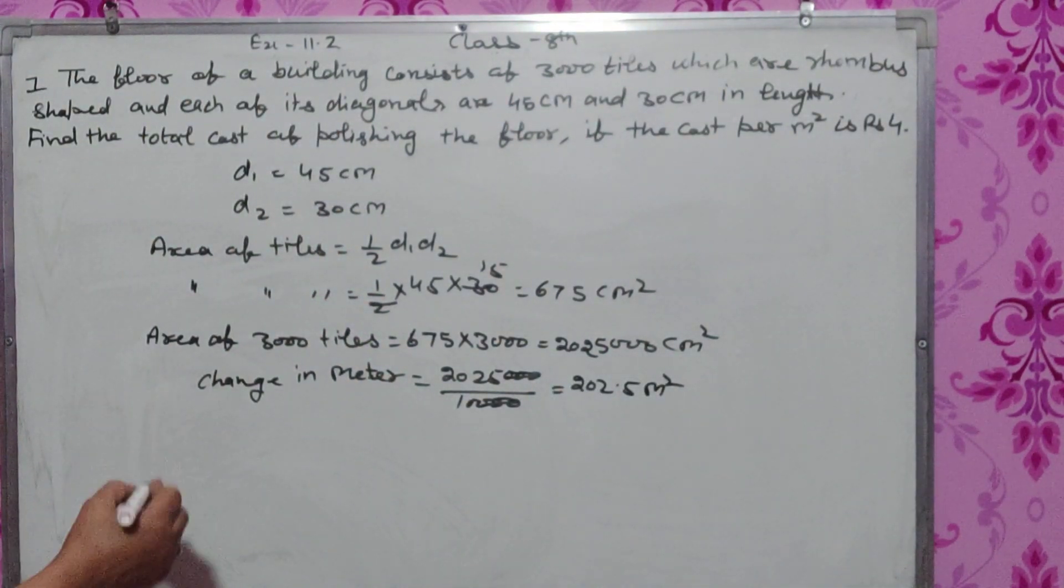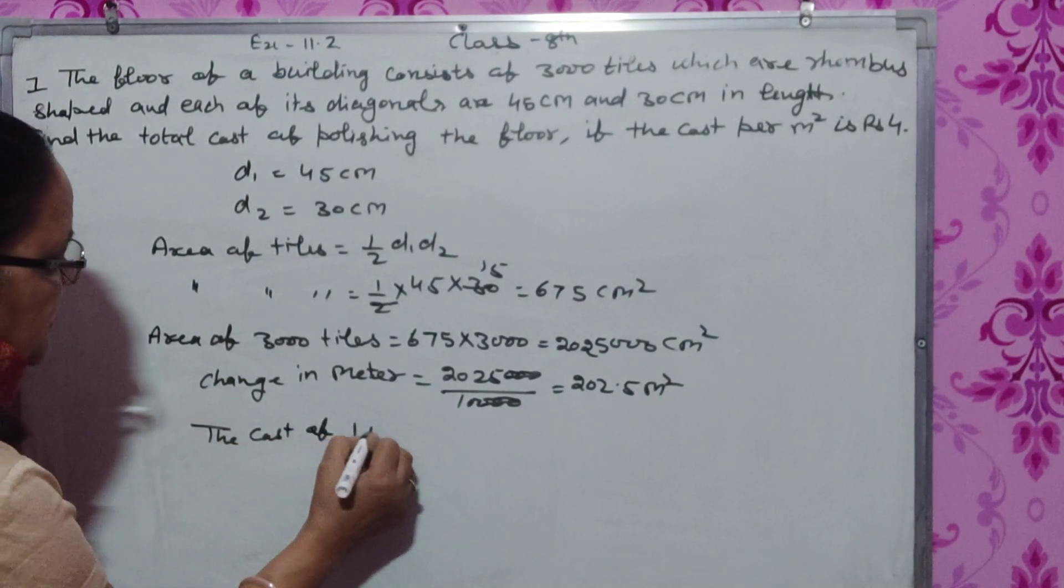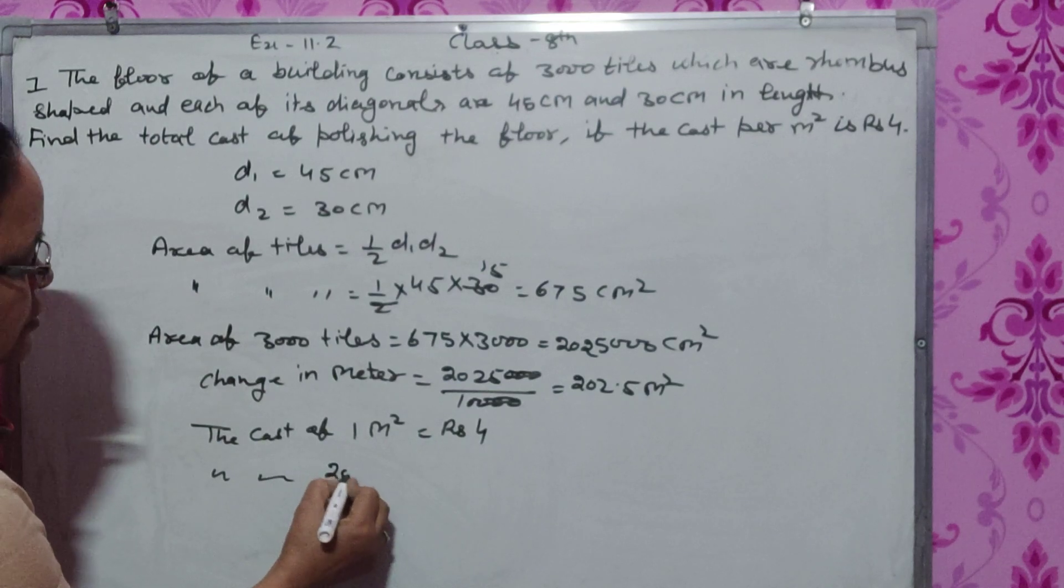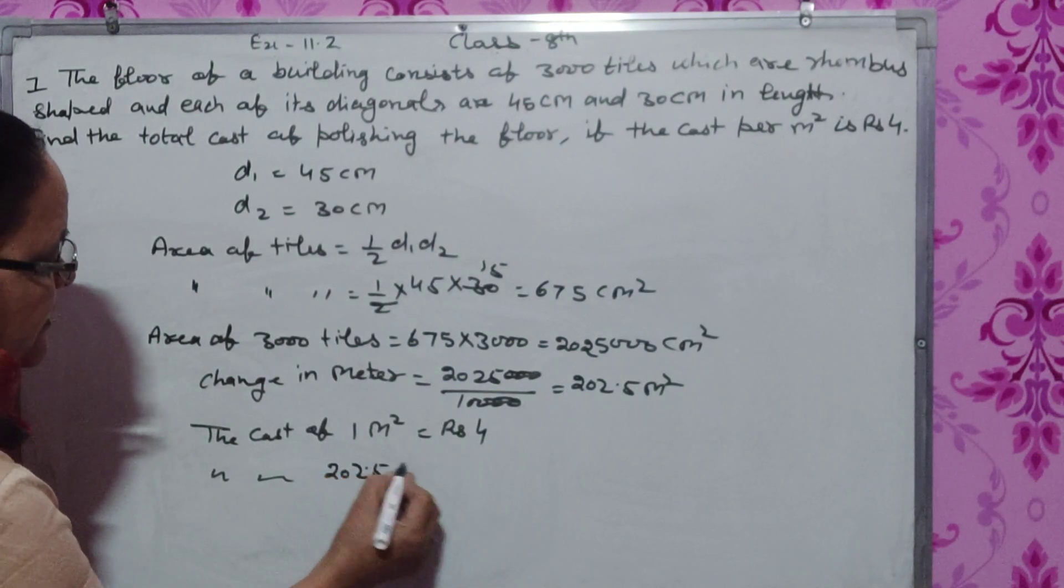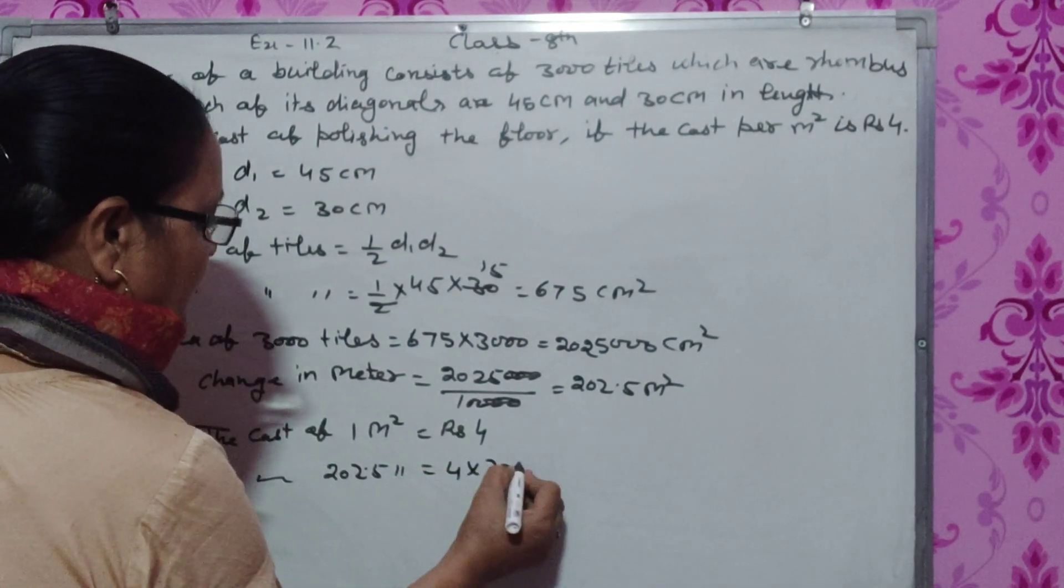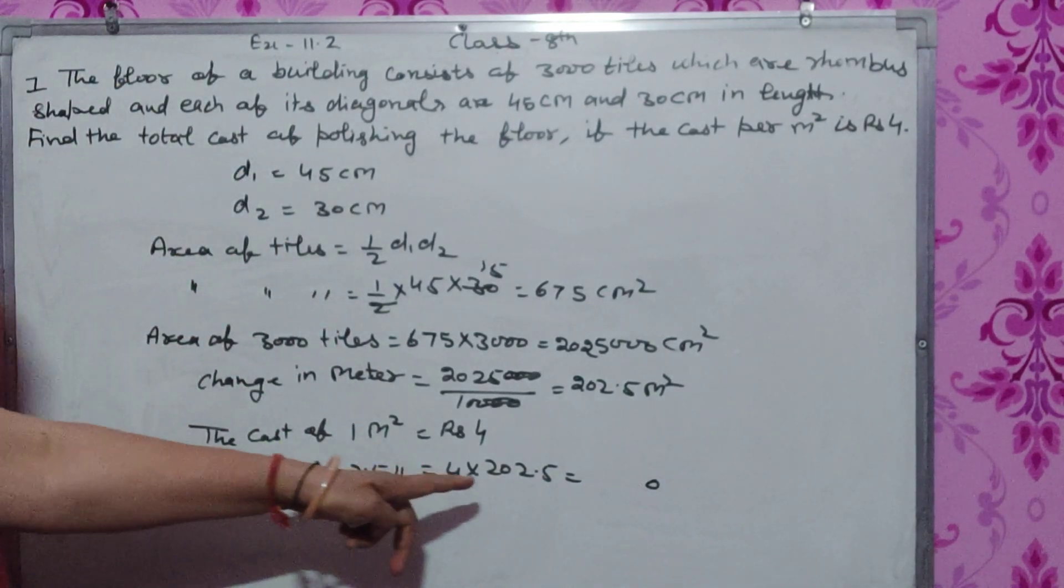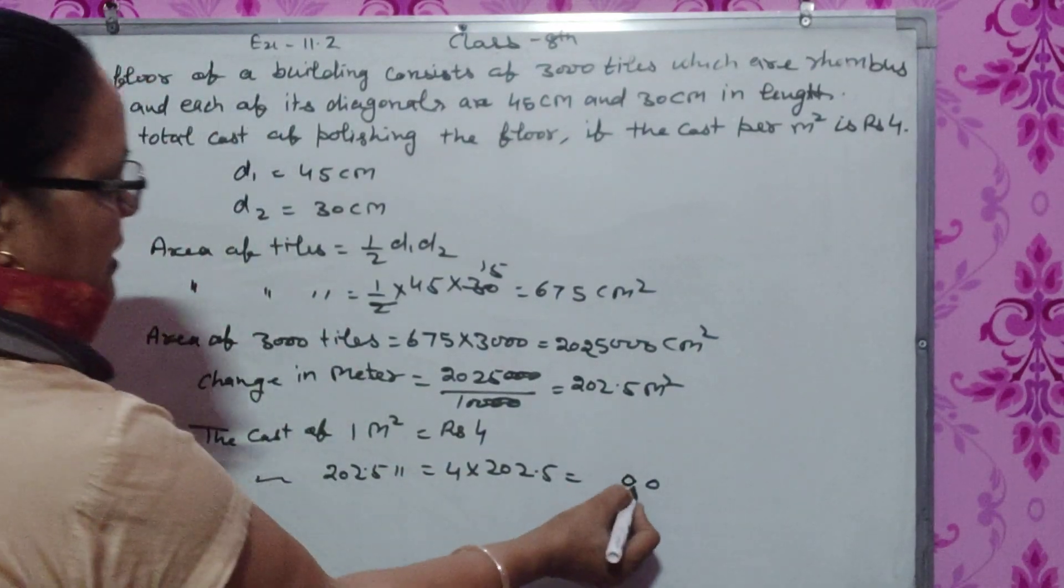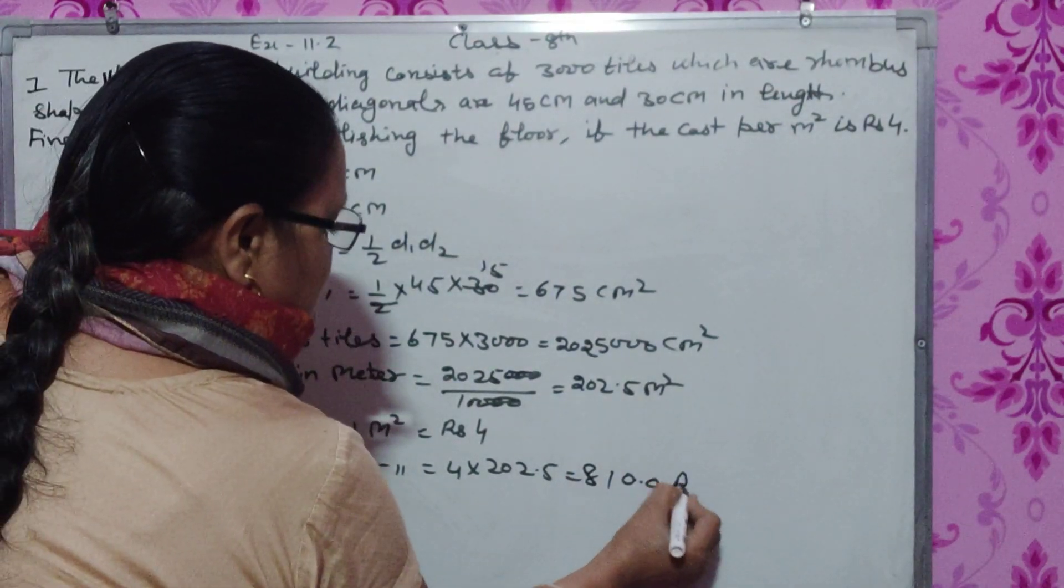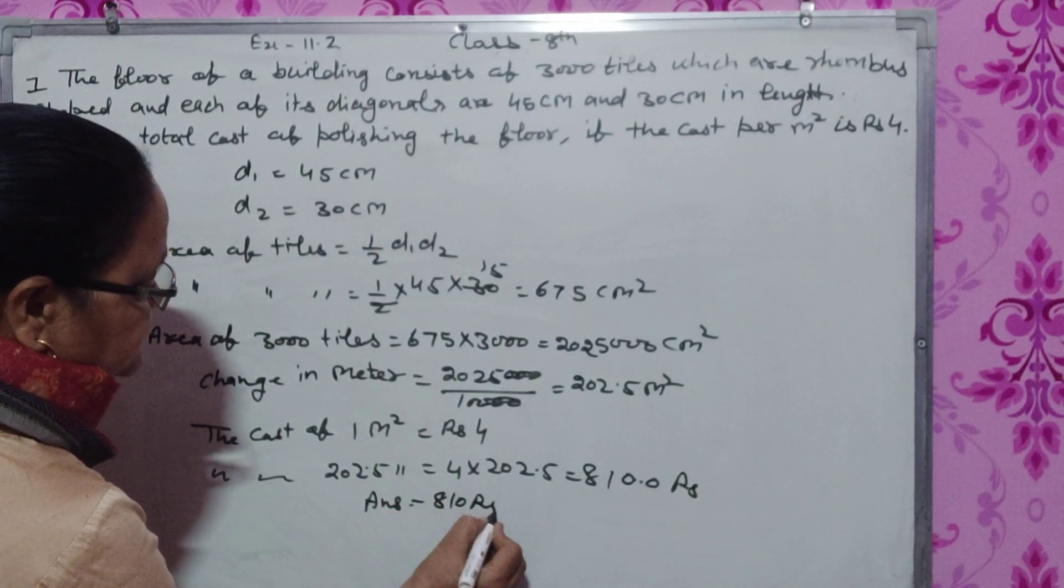The cost of 1 meter square equals Rs. 4. The cost of 202.5 meter square equals 202.5 times 4, which equals Rs. 810.